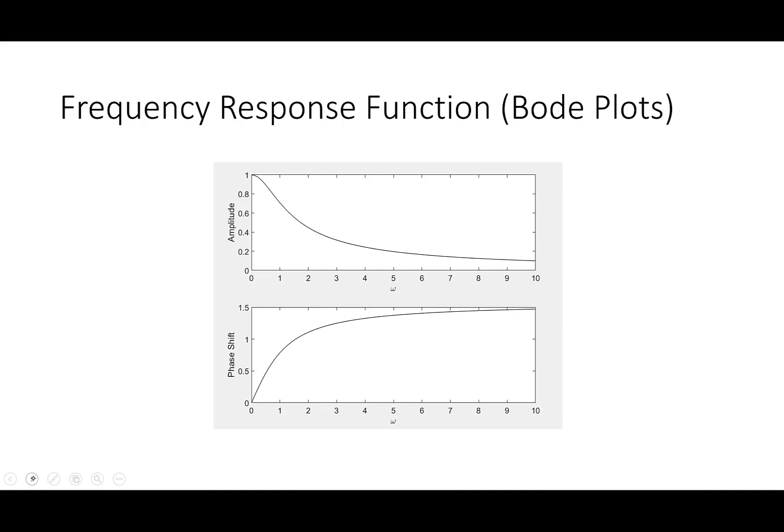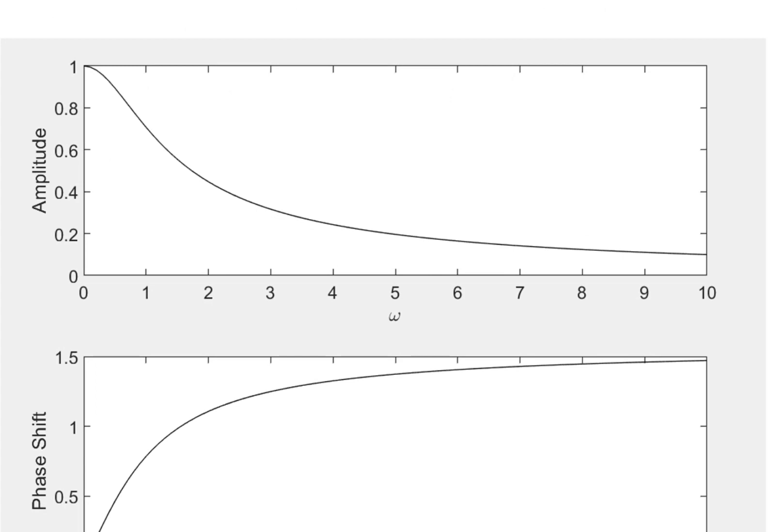The top plot here shows the amplitude as a function of ω, while the bottom plot shows the phase shift as a function of ω. In the first case, we can see that sure enough, as ω increases, the amplitude decreases towards zero.